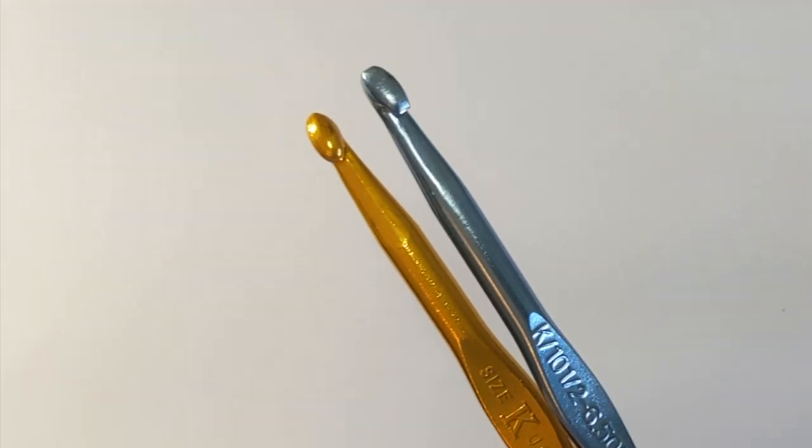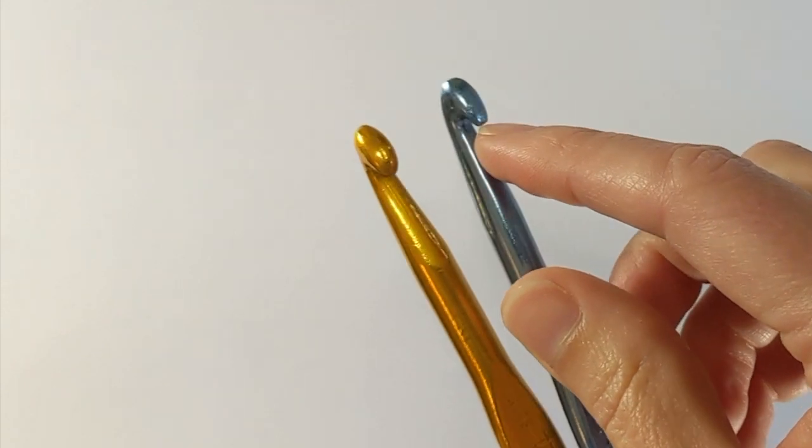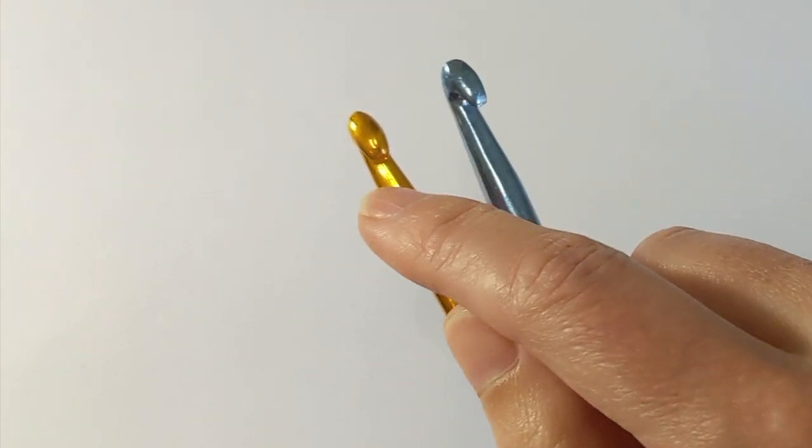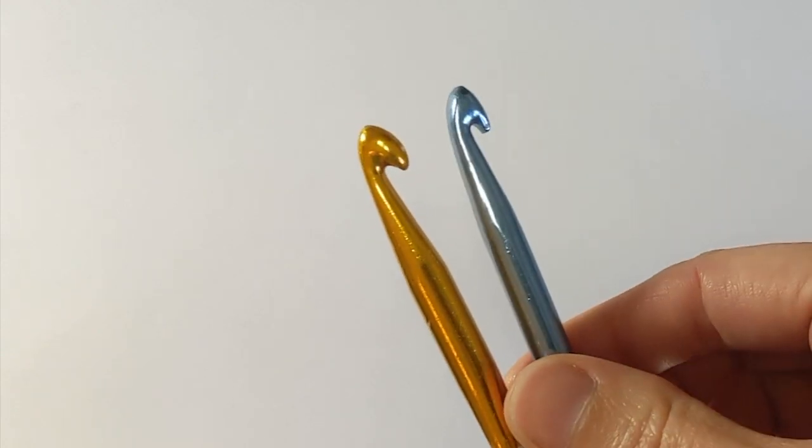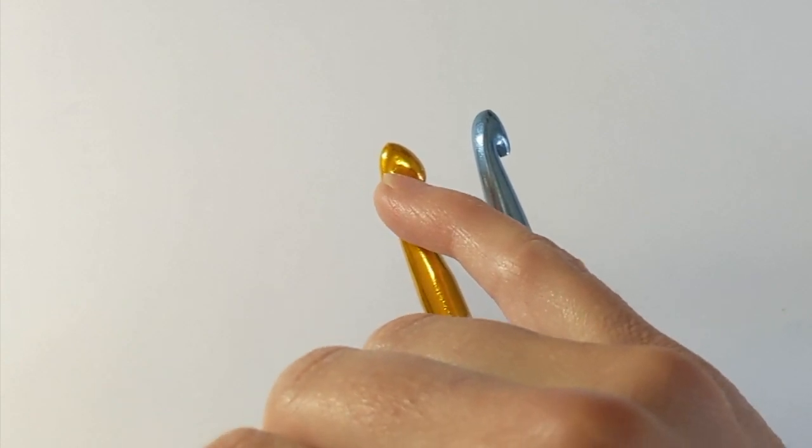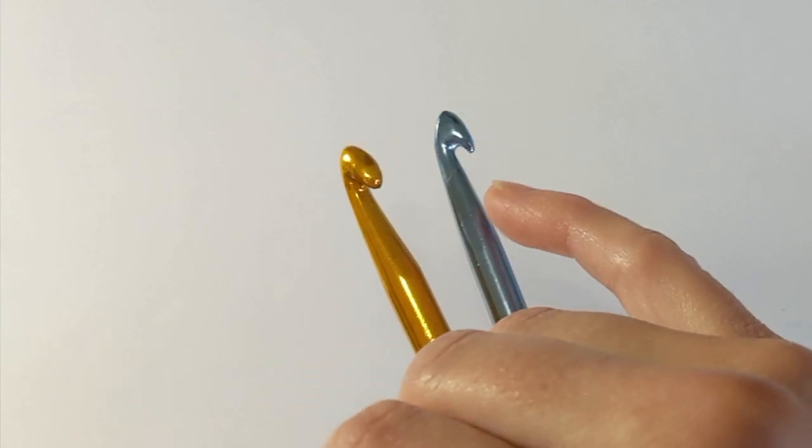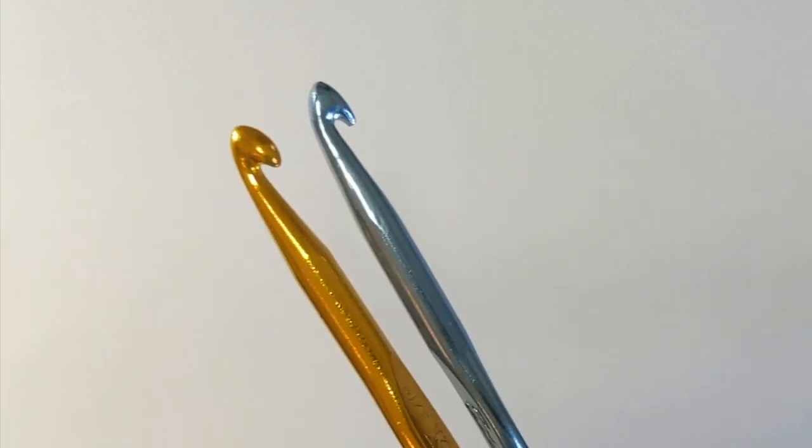And as we turn we start to see slight differences in the shape of that hook itself, that end point there. In the modern one it's a bit more blunt and off versus in the vintage one it's nicely rounded around. Again we're seeing that there's a slight indentation up around the hook that helps you grab that yarn versus a smoother transition overall in the modern one.